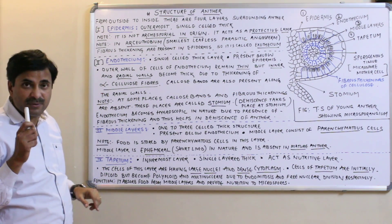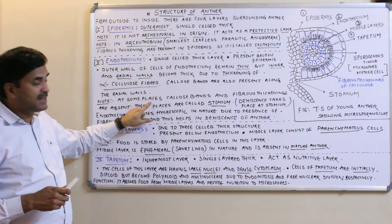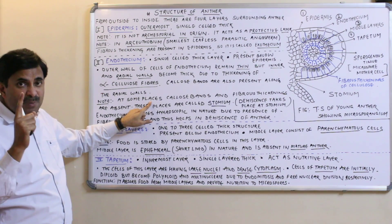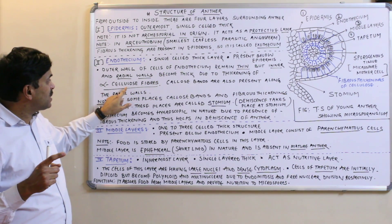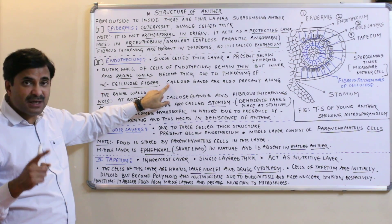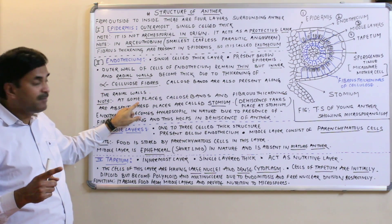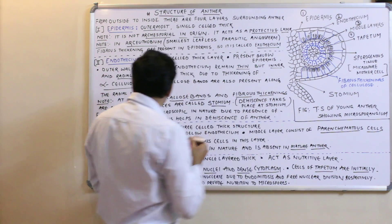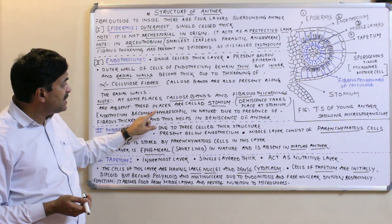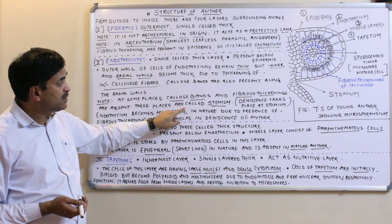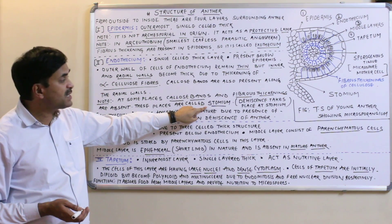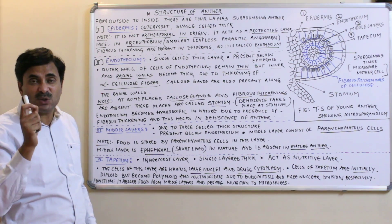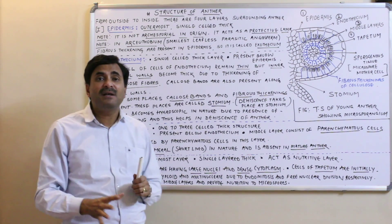In the endothecium there are a few places where the fibrous thickenings of alpha cellulose and callose bands are absent. These places on the endothecium are called the stomium.